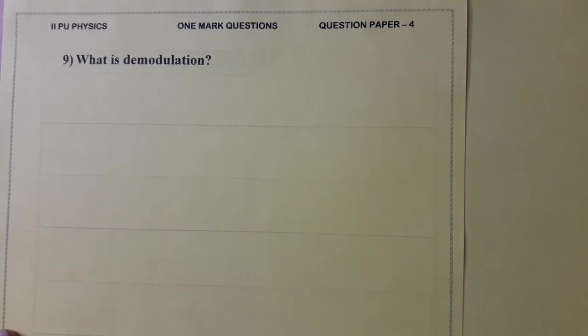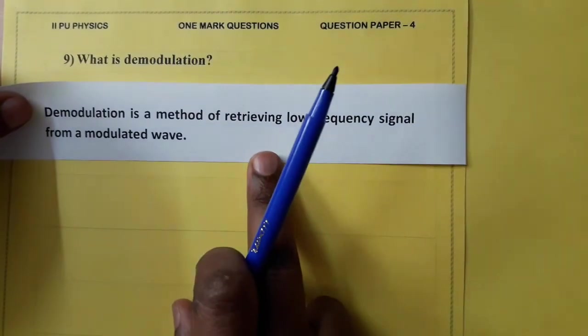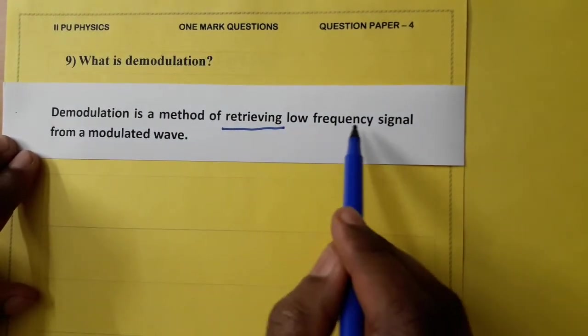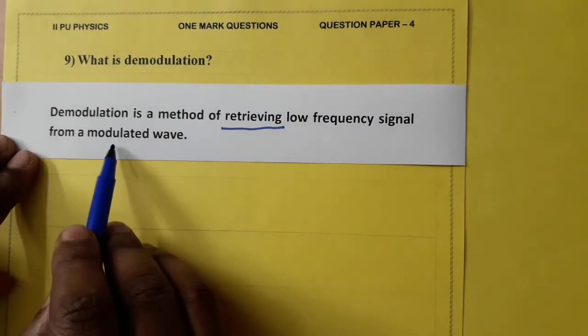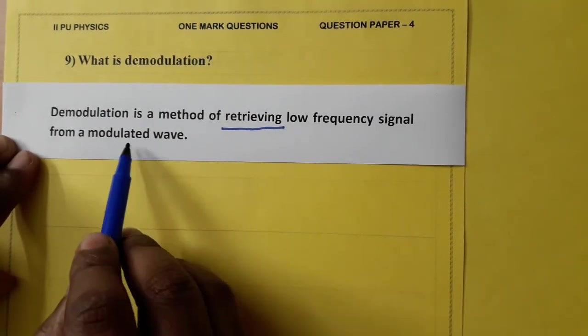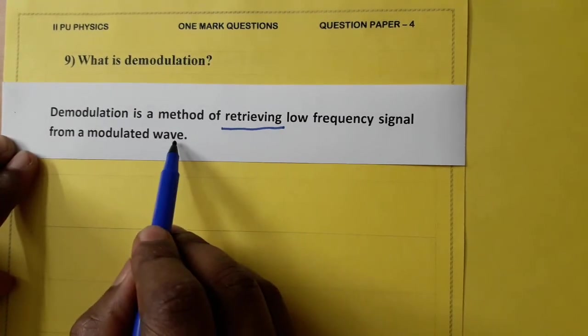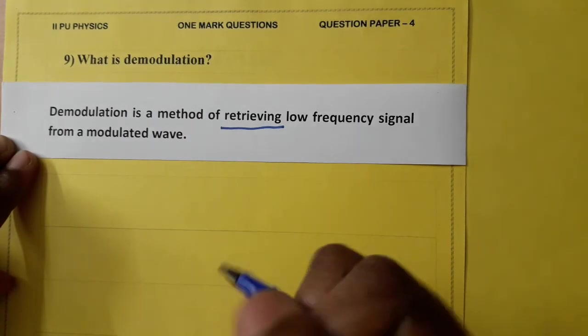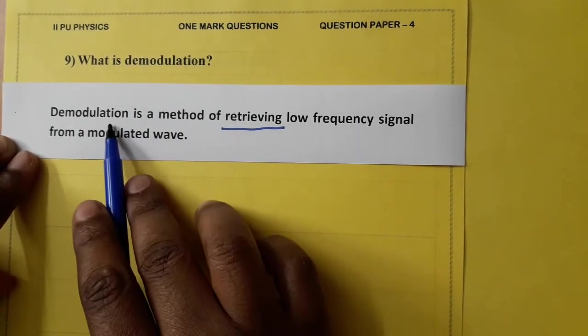What is demodulation? Demodulation is a method of retrieving low frequency signal from a modulated wave. So, modulated wave is the transmitted wave. From that modulated wave, signal should be retrieved, information should be retrieved. And that method is called demodulation.